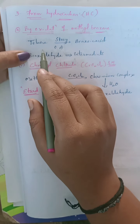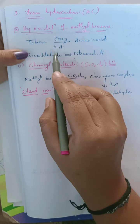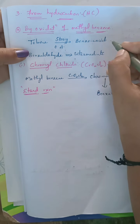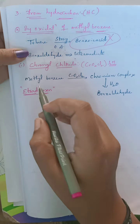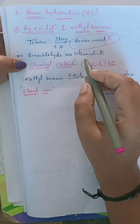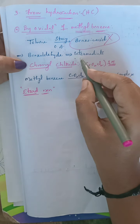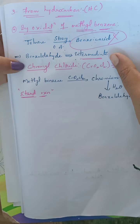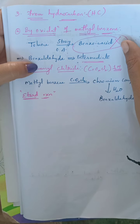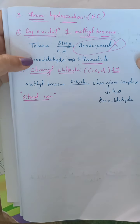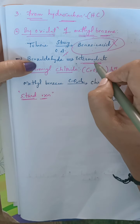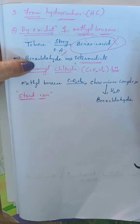Methyl benzene is toluene. When toluene undergoes oxidation with a strong oxidizing agent it goes directly to benzoic acid. However, if a selective oxidizing agent is used, the reaction stops at the intermediate stage, forming benzaldehyde instead of benzoic acid. The selective oxidizing agent forms an intermediate that cannot be converted further to benzoic acid — it stops at benzaldehyde.